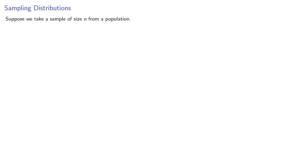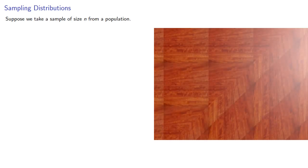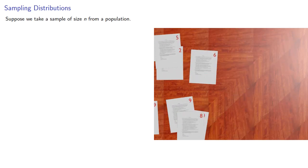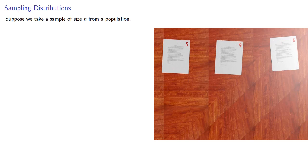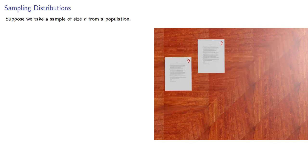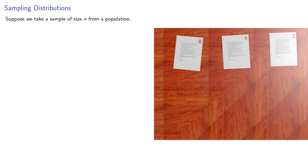Suppose we take a sample of size n from a population. For example, we might have a set of quizzes and take a sample of size 3. We can compute the mean of this sample, but consider this as the result of a random experiment: select three quizzes, compute the mean, and repeat the experiment.